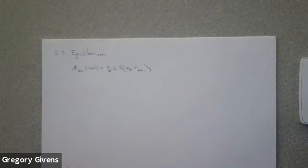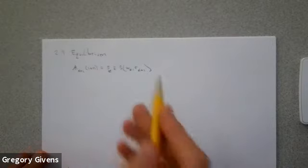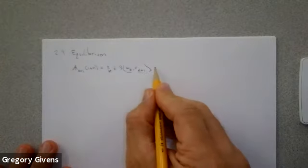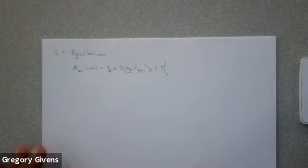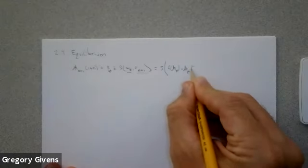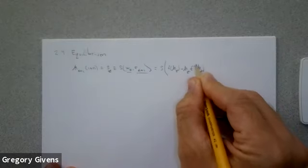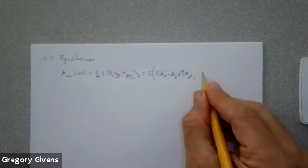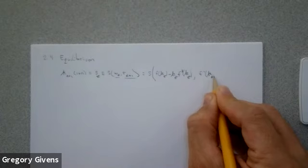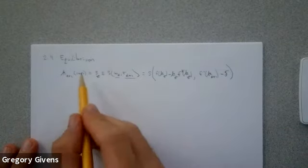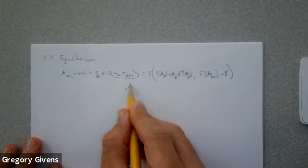To derive a law of motion for capital, we need to substitute in the equations for the two factor payments. The real wage is F(K_T) minus K_T times F'(K_T). The real return to capital at date T+1 is F'(K_{T+1}) minus delta. This gives us the fundamental law of motion for the capital stock, so K_{T+1} equals the savings function divided by one plus n.